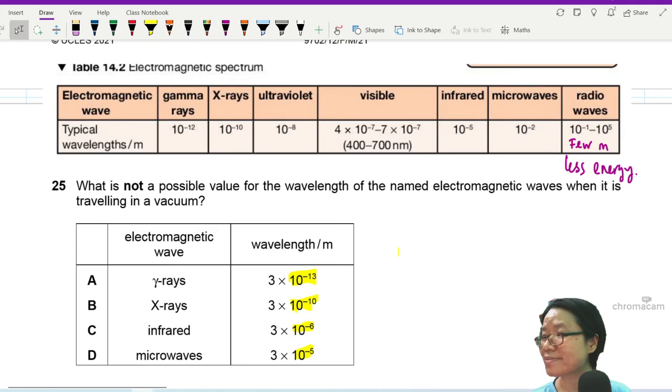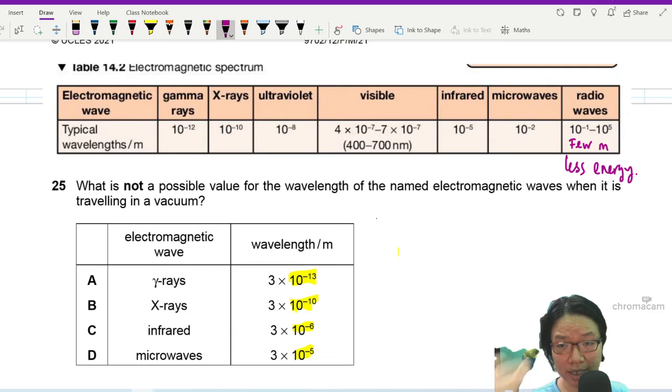When it comes to microwave, I am going to look at somewhere along here, and these are all just ranges. If you look at a more detailed table that I've given you, the values are overlapping.